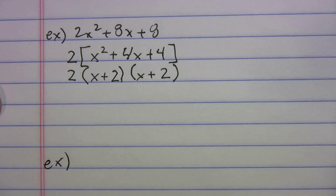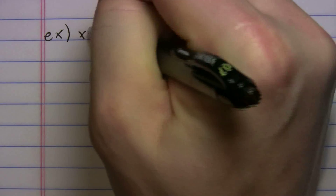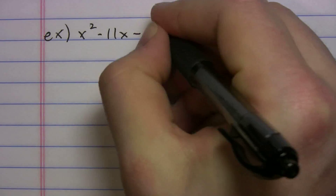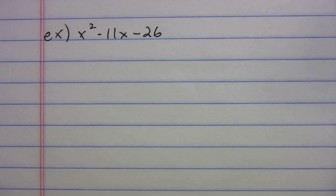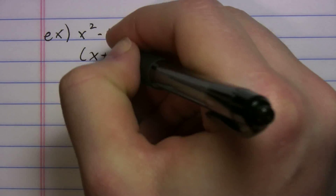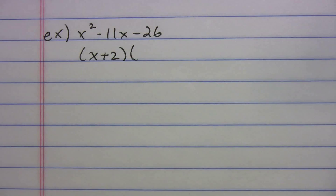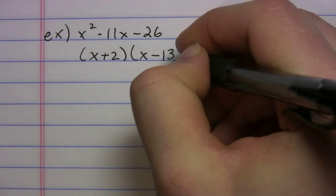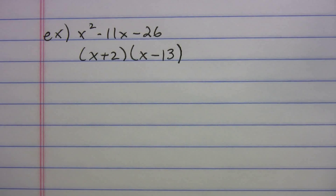Quick quiz: can you factor x² − 11x − 26? Pause the video and try it. The answer is (x + 2)(x − 13). If you got that, you pass the foiling and reverse foiling quiz!